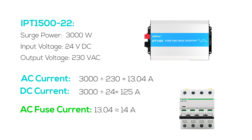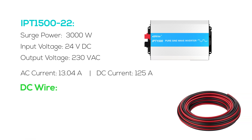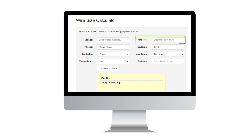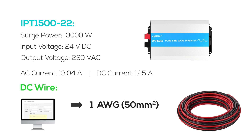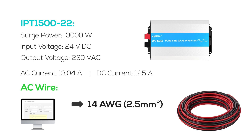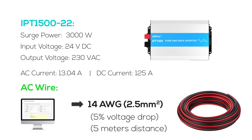According to this calculation, you can use a 14-amp fuse on the AC side and a 125-amp fuse on the DC side. For wire size calculation using this method, an online calculator is recommended, considering factors including current-carrying capacity, voltage drop, length of wire run, and ambient temperature. Per the online calculator: on the DC input side, a 1 AWG or 50 square millimeter wire with 3% voltage drop is recommended. On the AC output side, a 14 AWG or approximately 2.5 square millimeter wire is suitable, handling up to about 16 amperes with a 5% voltage drop over a typical 5-meter distance.